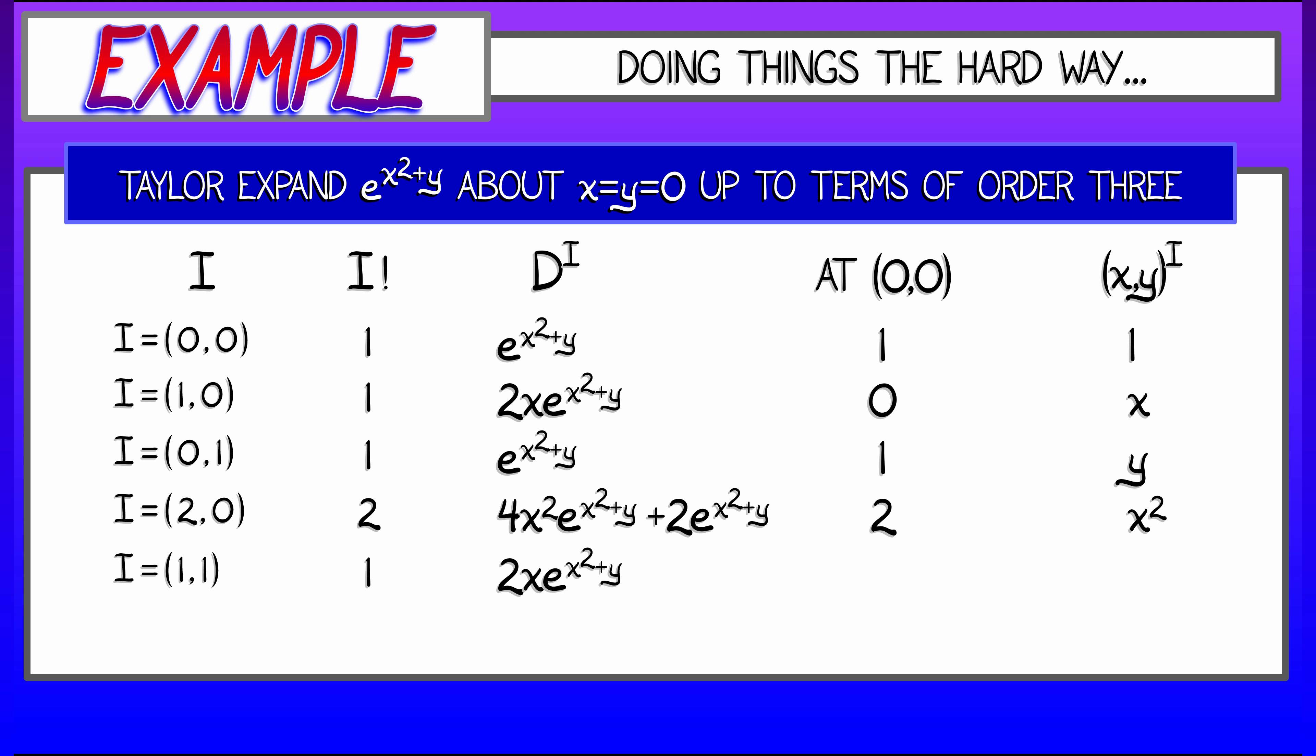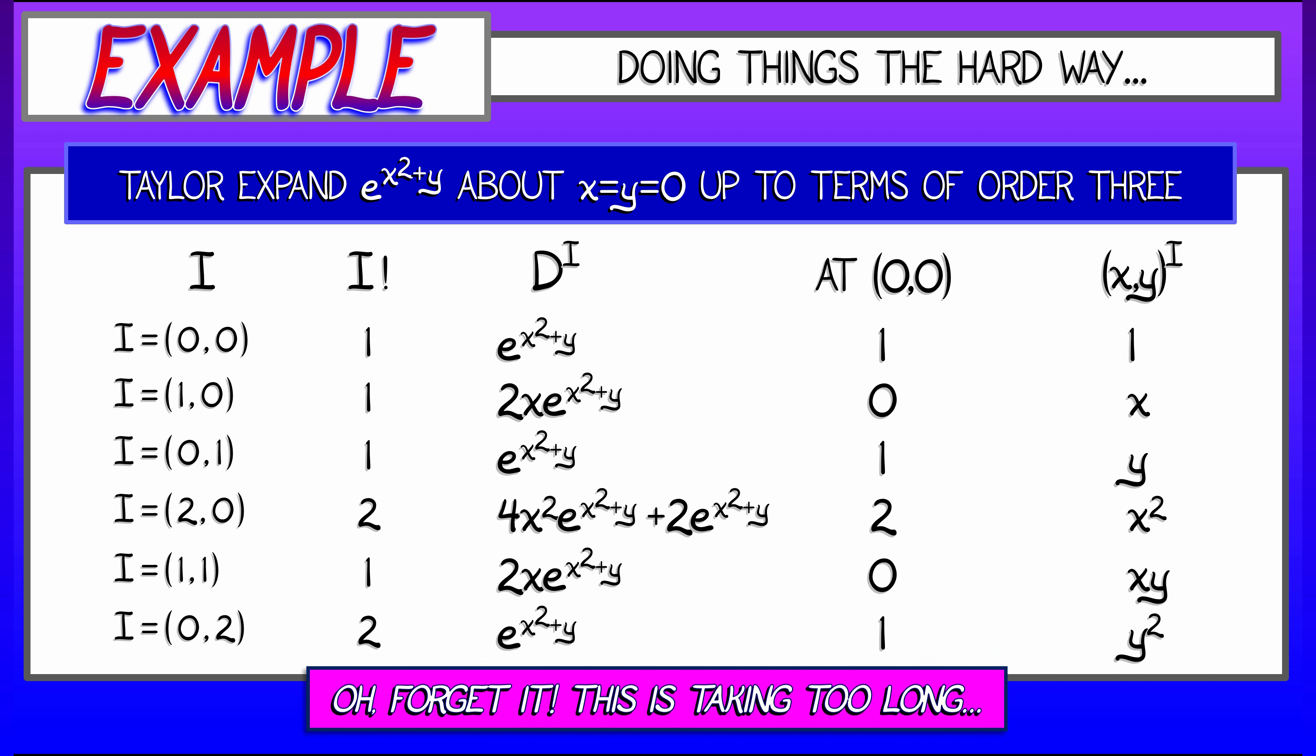The mixed second partial, I need to take the partial with respect to x and y. And I do that, but that evaluates to 0. And now I finally get to 0,2. I take the second partial with respect to y. That's not so bad. I evaluate, I get 1, multiply by y squared, divide by 2. Okay, that's the second order terms.